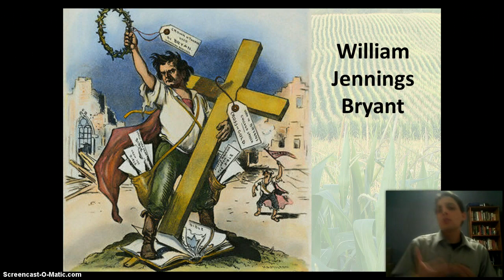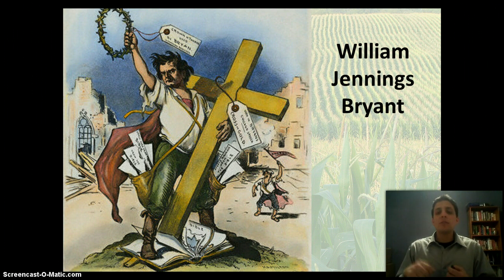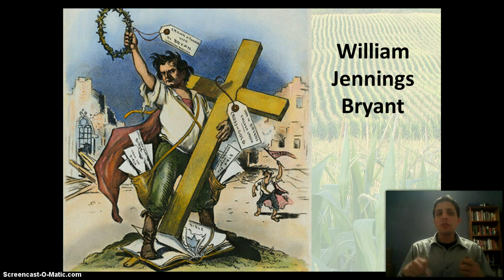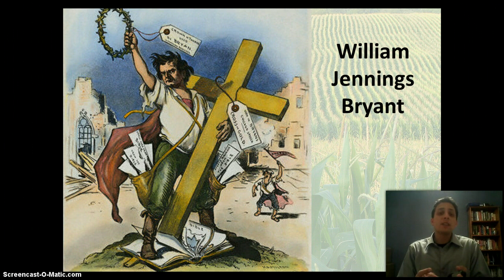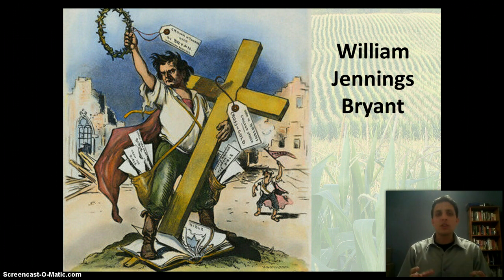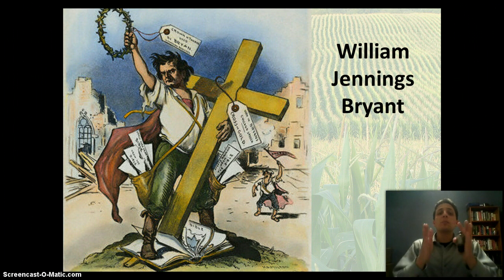William Jennings Bryan is depicted in a famous political cartoon carrying the cross of gold — an allusion to the fact that he wants bimetallic currency, backing money with silver and gold. He's portrayed as almost like a crusader for the people and for the Populist Party. He's going to go out and actively campaign, one of the first candidates to travel all over the country, making hundreds of speeches and trying to reach millions of people directly to get elected president.